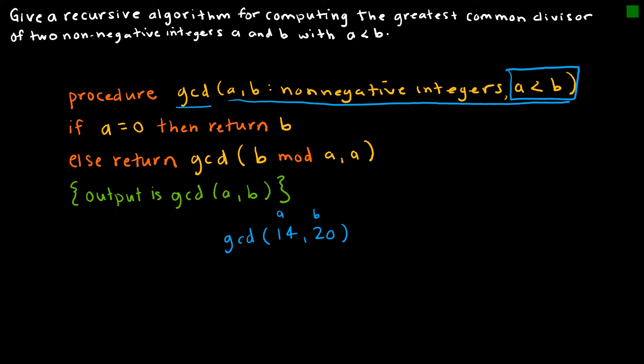The process says if A is zero, then return B. Otherwise, return the GCD of B mod A and A. So go ahead and do your Euclidean algorithm that says 20 is equal to 14 times 1 plus 6. This is that mod - B mod A is 6. So it's saying return GCD of B mod A, which is 6, and A, which is 14.